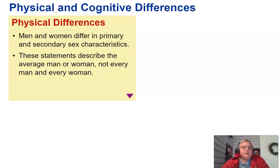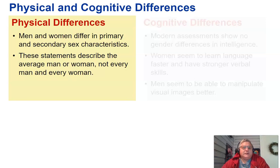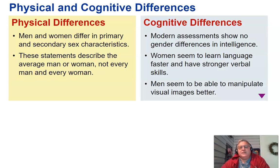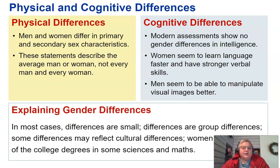Men and women differ in their primary and secondary sex characteristics. These statements describe the average man or woman, not every man or every woman. Modern assessments show no gender differences in intelligence. Women seem to learn language skills faster and have stronger verbal skills, while men seem to be able to manipulate visual images better. In most cases differences are small and reflect group differences; some may reflect cultural differences. Women now obtain most of the college degrees in some science and math fields.